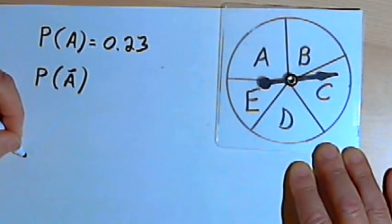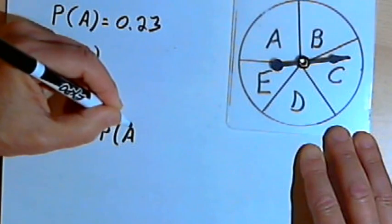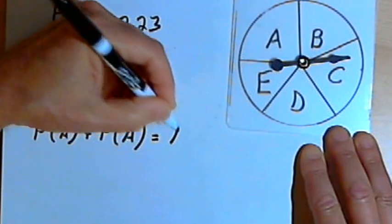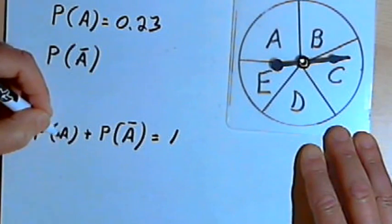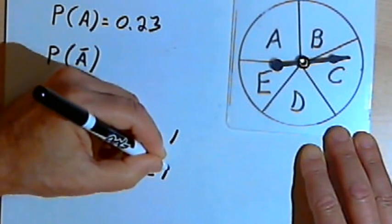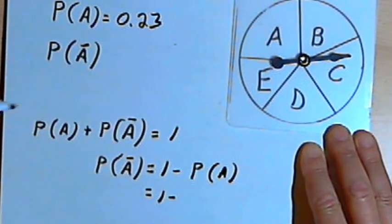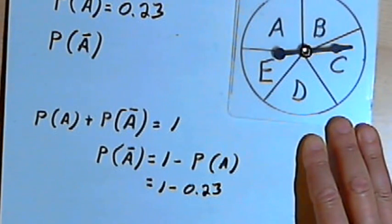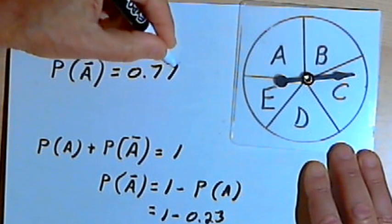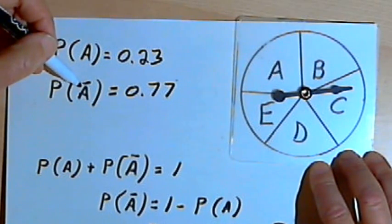The probability of A plus the probability of the complement of A equals 1. If I subtract the probability of A from both sides, the probability of the complement of A equals 1 minus the probability of A. The probability of A was 0.23, so 1 minus 0.23 gives 0.77. That's the probability of the spinner not landing in section A.